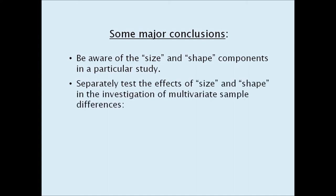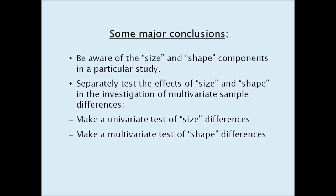That is, perform a univariate test of size differences and separately, using a distance measure such as chi-square or Hellinger which operate strictly on relative values, perform a multivariate test of shape differences.